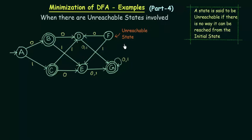Now let us see how we can minimize a DFA when there are unreachable states involved. The procedure is very simple. Whenever you have an unreachable state in your DFA and you need to minimize it, the first thing you have to do is just remove that unreachable state and then proceed as you normally would. Here in this DFA, let me remove this unreachable state F and draw the transition table without the unreachable state F.